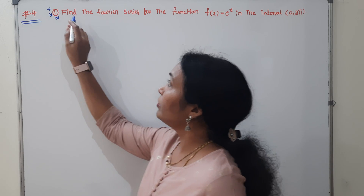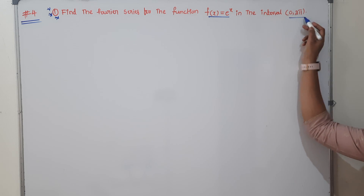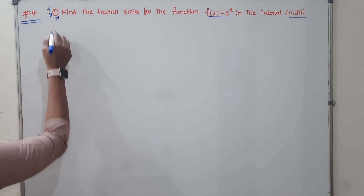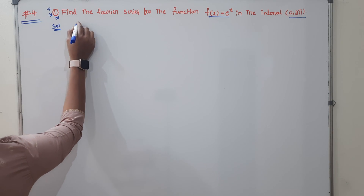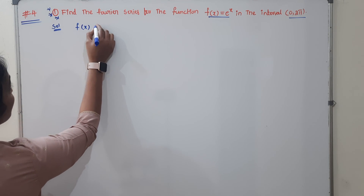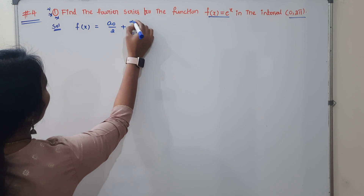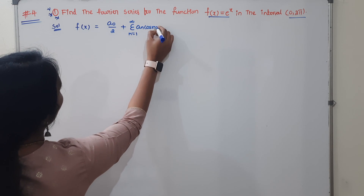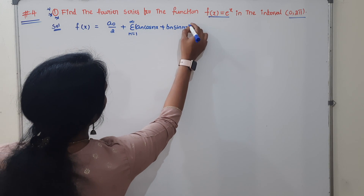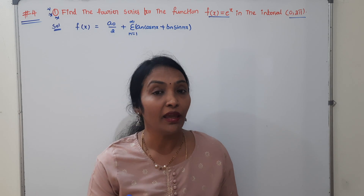We are going to find the Fourier series for the function f(x) in the interval 0 to 2π. The Fourier series is equal to a0/2 plus summation from n=1 to infinity of (an·cos(nx) + bn·sin(nx)). This is the Fourier series, where the coefficients are a0, an, and bn.